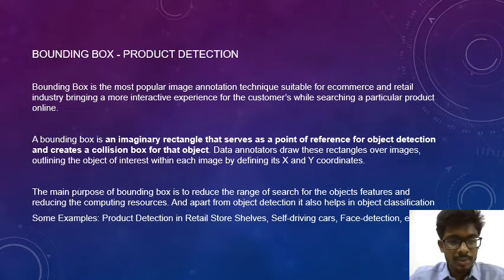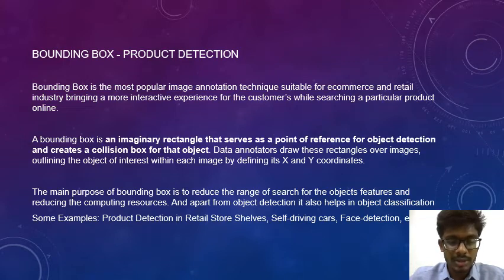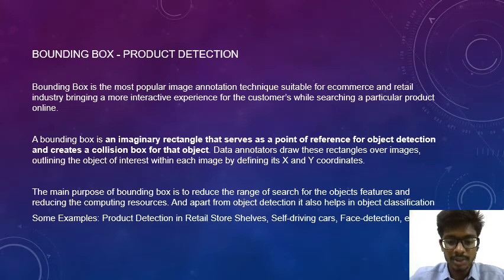So what is a bounding box? A bounding box is the most popular image annotation technique, suitable for e-commerce and retail industry, bringing a more interactive experience for customers while searching for a particular product online. A bounding box is an imaginary rectangle that serves as a point of reference for object detection and creates a collision box for that object. Data annotators draw these rectangles over images, outlining the object of interest by defining its x and y coordinates. The main purpose of a bounding box is to reduce the range of search for the object's features and reduce computing resources, and apart from object detection it also helps in object classification.